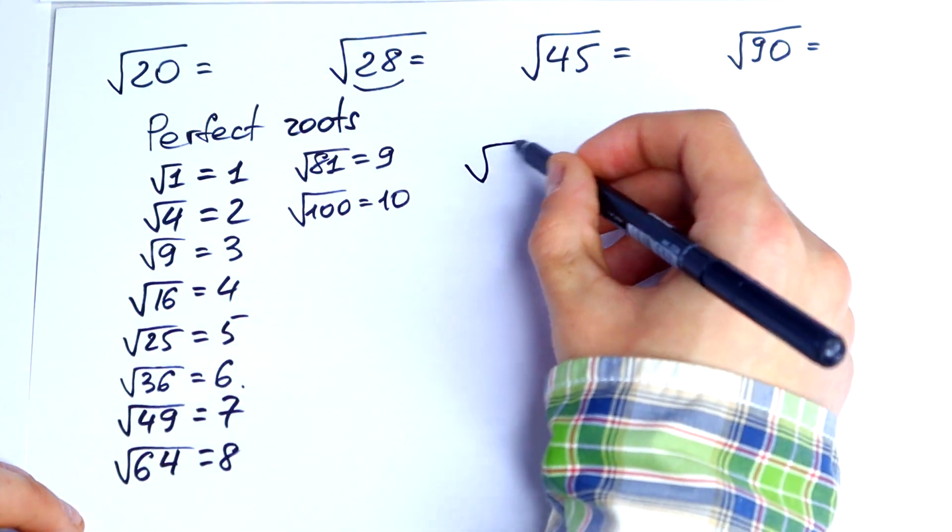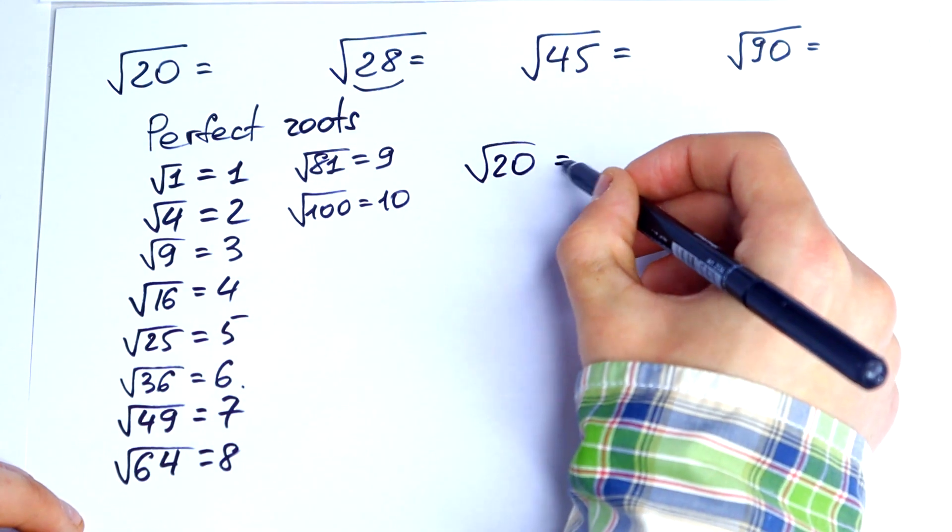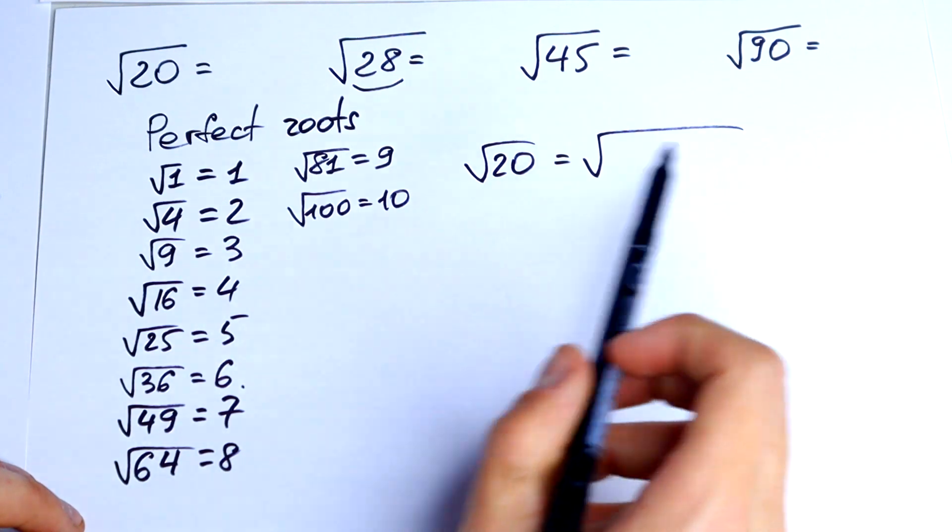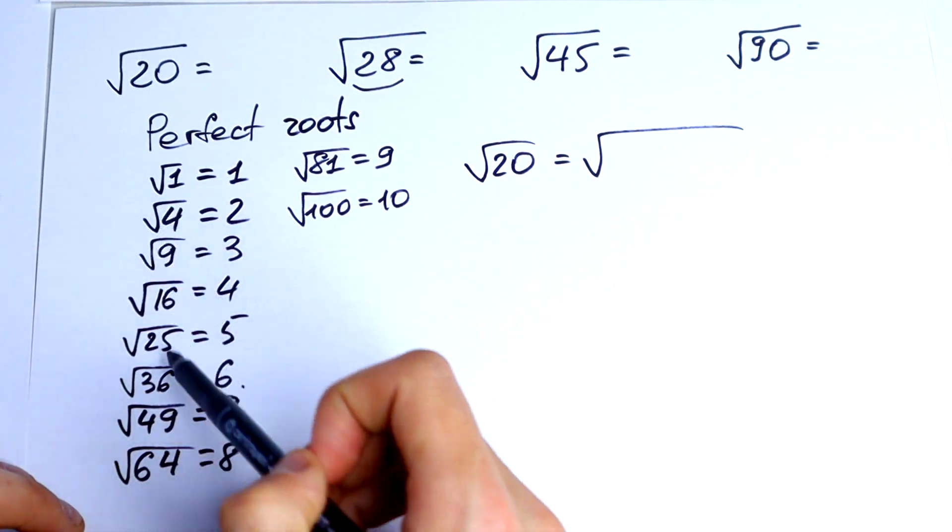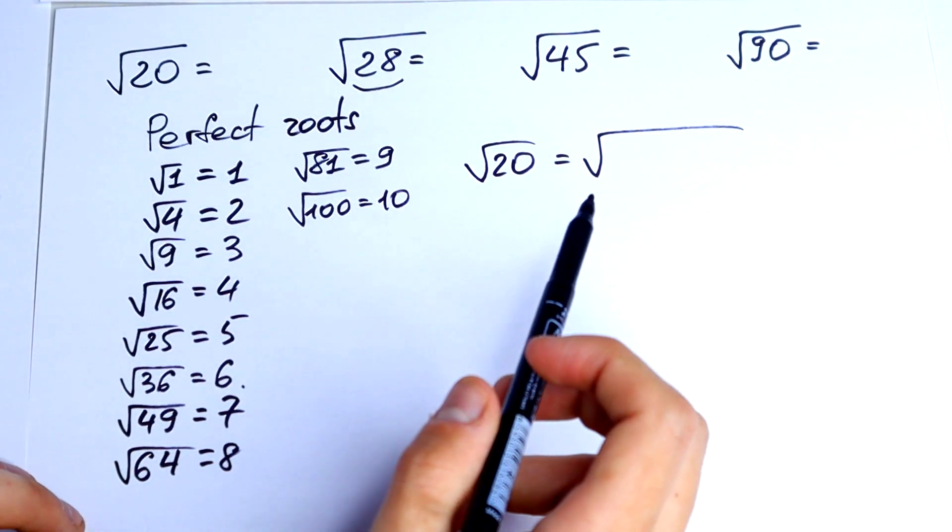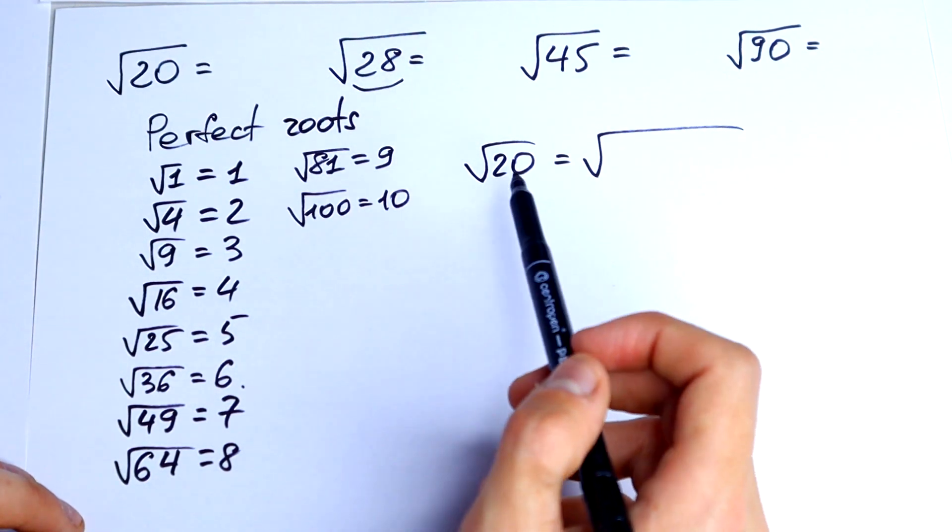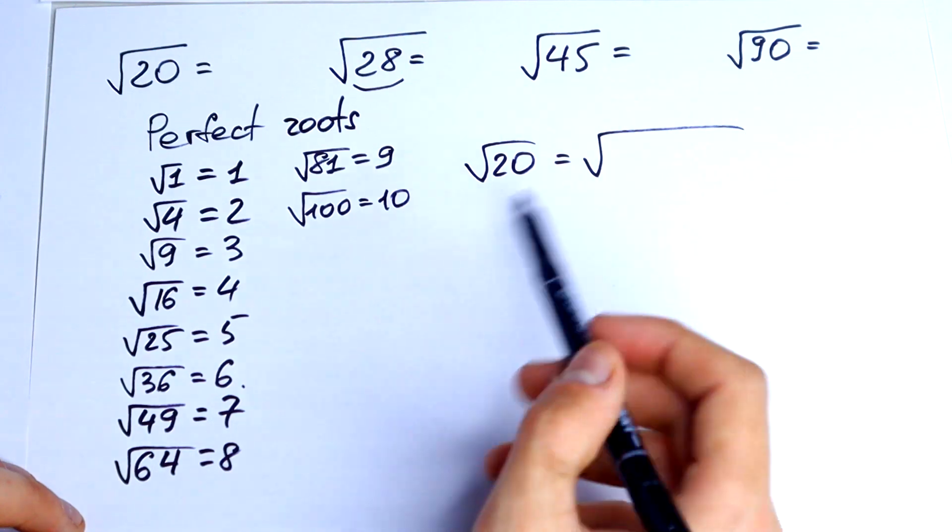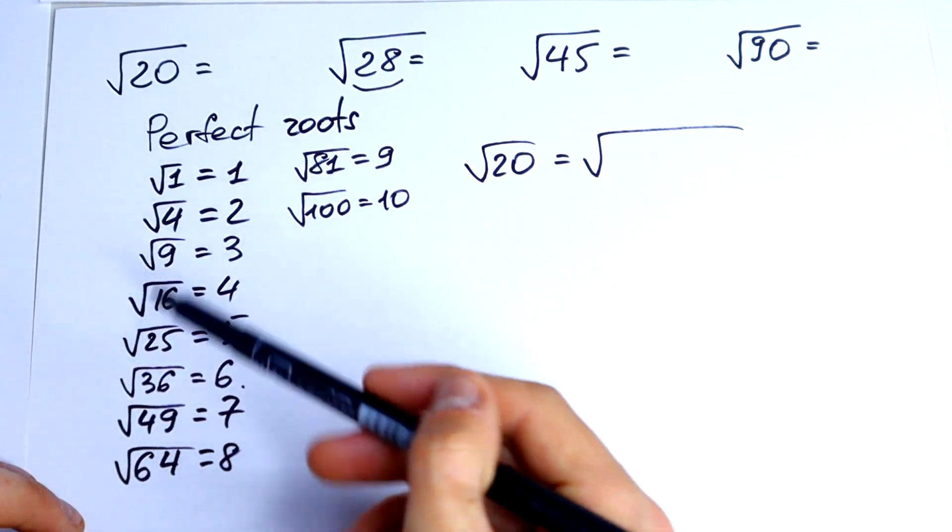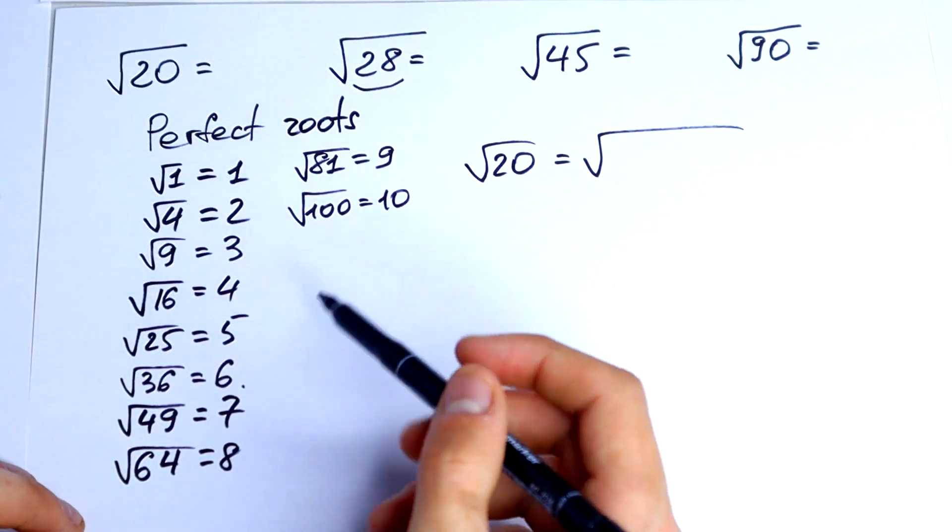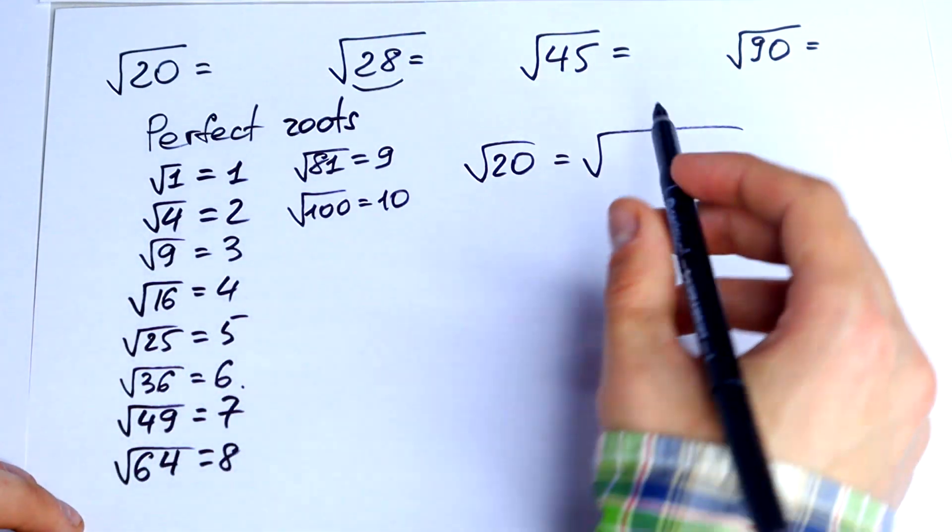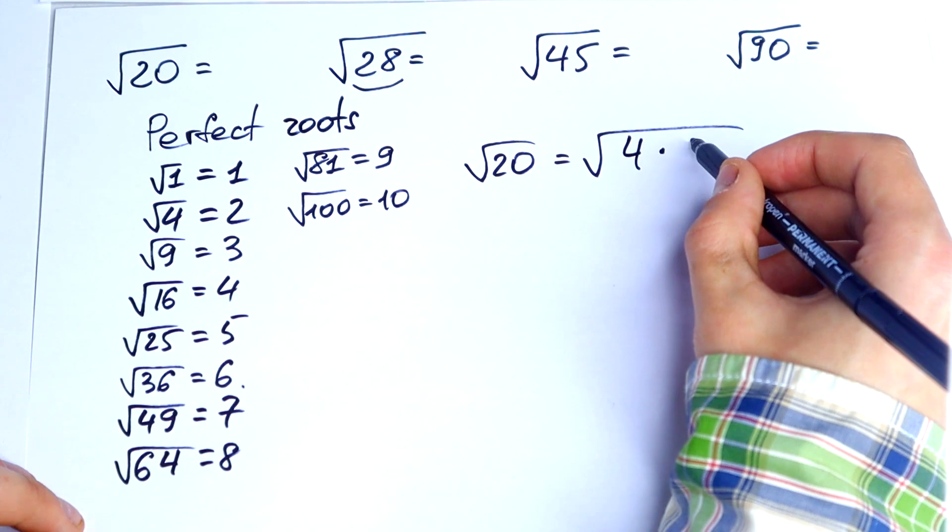square root of 20. We can represent this 20 using these perfect roots. Square root of 20 would be equal to 2 times 10. But we don't have 2 and 10 right here. So we can represent it by 4 times 5.